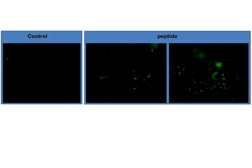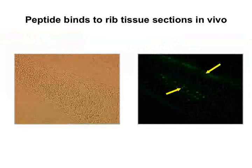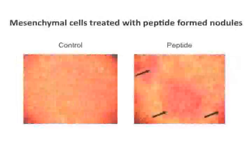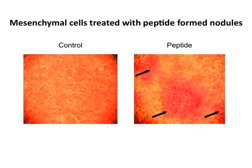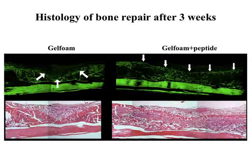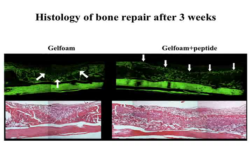Fluorescein isothiocyanate labeled avidin permits microscopic detection of the binding of peptides on cells grown in vitro. Here, the peptides bind to mesenchymal cells in culture. To determine the osteogenic effect of peptides on cells in vitro, mesenchymal cells in culture can be treated with test peptides to determine changes in cell morphology. For instance, at day 4, the cells start to aggregate, and the aggregates enlarge with time to form nodules. Interestingly, bone sections stained with H&E autofluoresce under UV light, and this greater contrast between bone and non-bone tissues facilitates analyses.